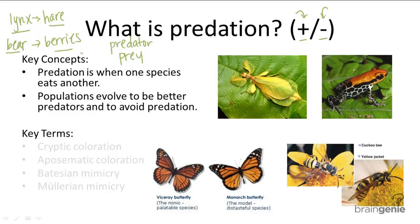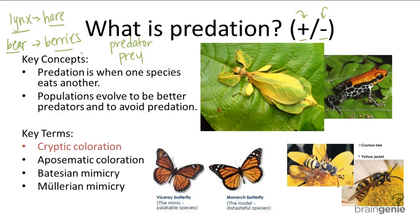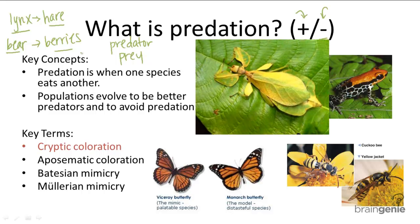The four main passive defenses are: cryptic coloration, aposematic coloration, Batesian mimicry, and Mullerian mimicry. Cryptic coloration, also known as camouflage, is when an organism's physical characteristics look like its surroundings. You can see in this picture that this insect has adapted to look like the leaf it lives on, making it harder for predators to spot.